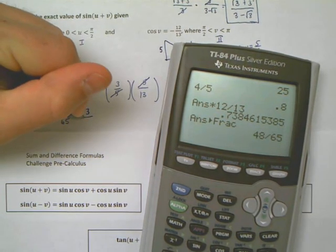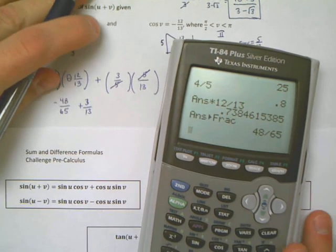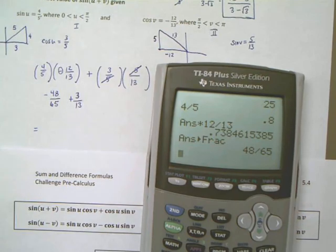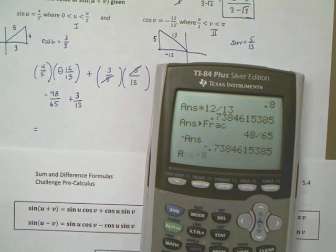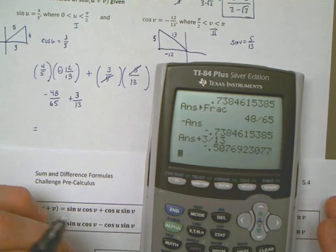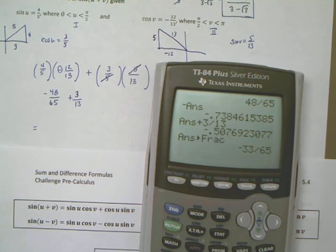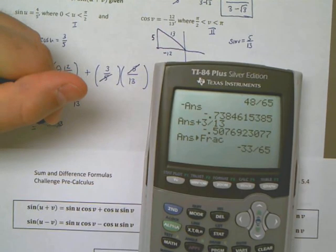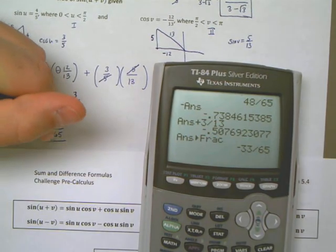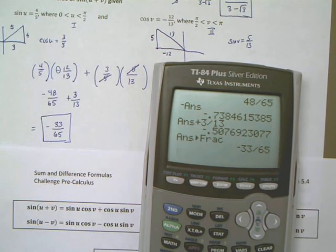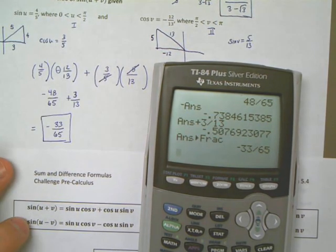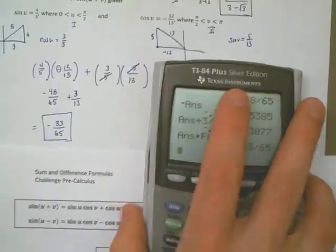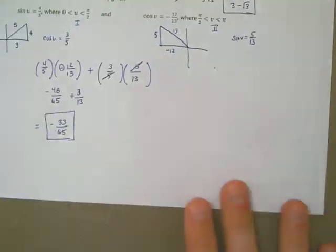And then I have, okay, on this side at least I can do this. The fives go away, and I'm left with 3/13. So negative 48/65 plus 3/13 gives me a grand total of negative 33/65. And that is the value of sine u plus v.